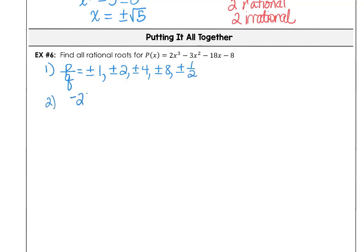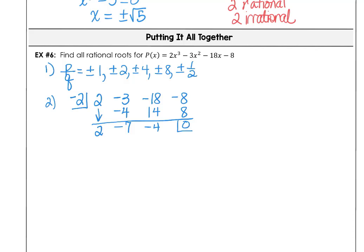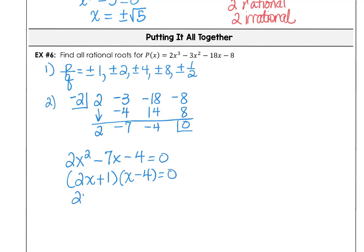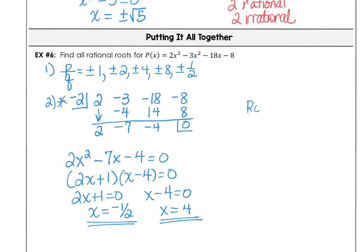Using synthetic division with negative 2 on 2, negative 3, negative 18, negative 8 — we found that negative 2 is one of our zeros. The depressed polynomial is 2x² − 7x − 4, which factors as (2x + 1)(x − 4). So 2x + 1 = 0 gives x = negative 1 half, and x − 4 = 0 gives x = positive 4. We have three zeros for this cubic polynomial: negative 2, negative 1 half, and positive 4 — all rational.